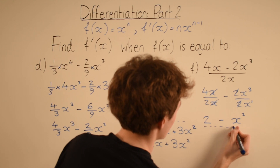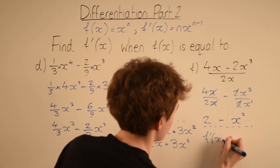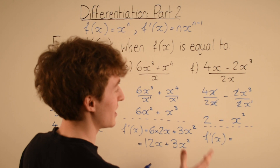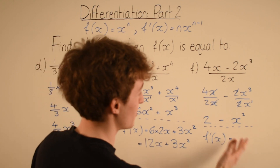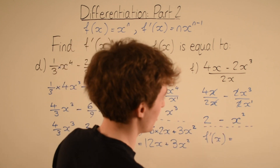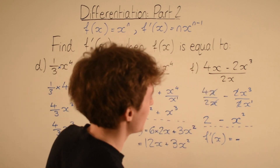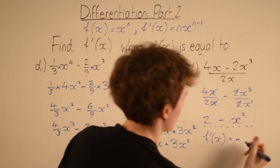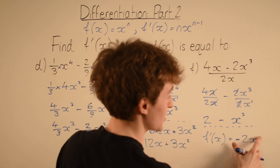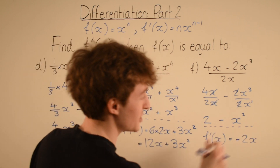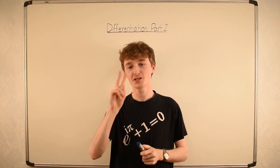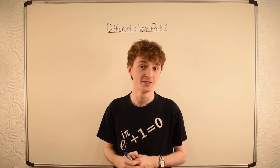Now we differentiate 2 minus x squared. The derivative of any constant is 0, so the 2 disappears. For minus x squared: we copy the minus, and the 2 comes down in front to give 2x to the power of 2 minus 1, which is 1 — so just 2x. Final answer: minus 2x. Thanks for watching this lesson on differentiation part 2. Hope you've enjoyed. Part 3 is coming very soon — stay tuned, see you next time.